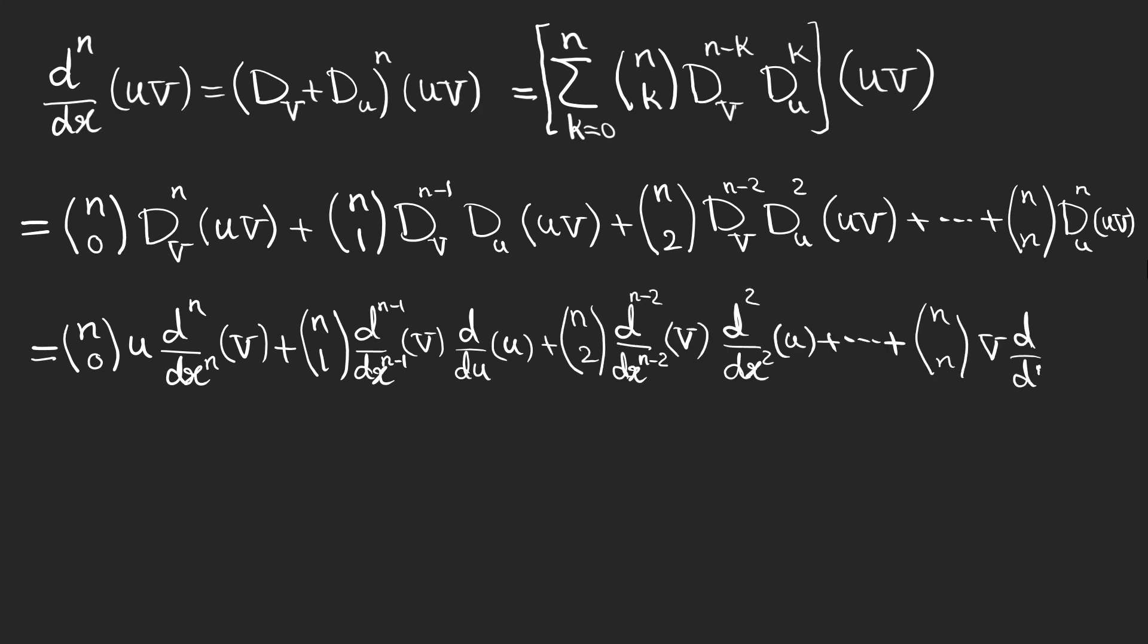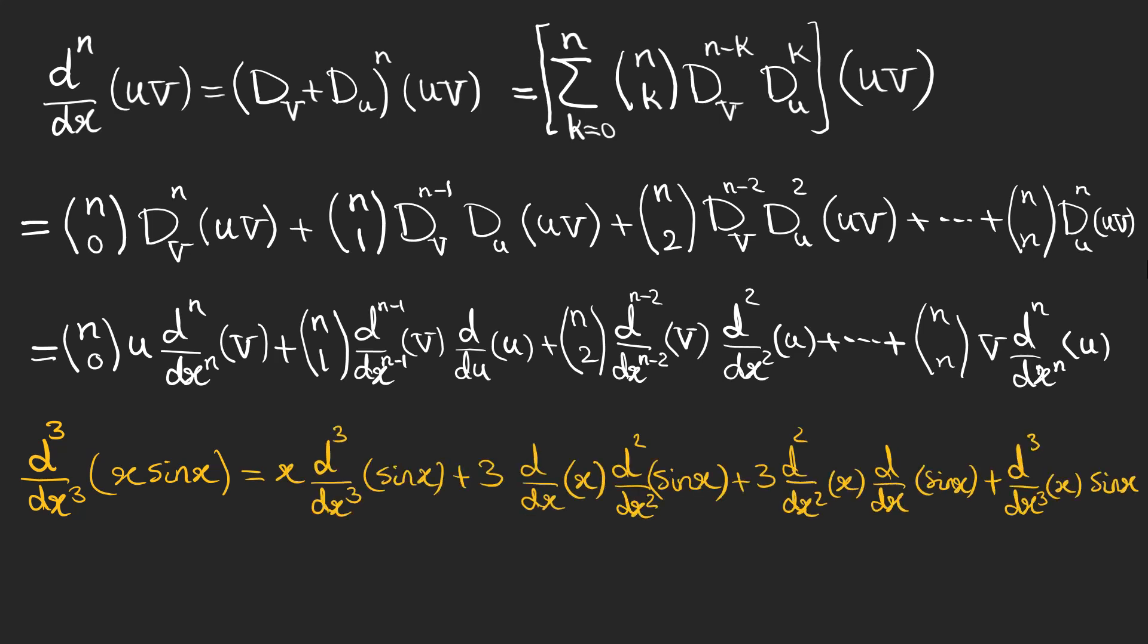As an example, let's find this derivative in which u and v are x and sine x. The last two parts are zero because the second and third derivatives of x are zero, and the answer is something like this.